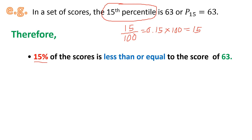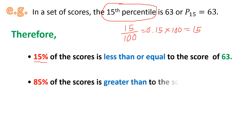Aside from this simple interpretation, we can have the complement of this data. Since 15% of the scores is less than or equal, therefore we may also state that 85% of the scores is greater than the score of 63. That 85% came from 100% minus 15%, which is the complement of 15% in terms of 100%.